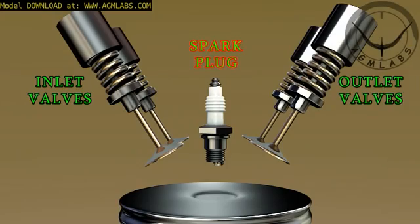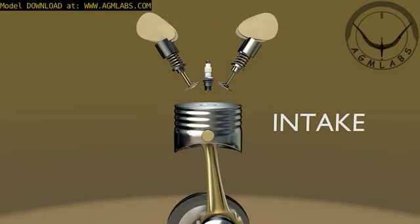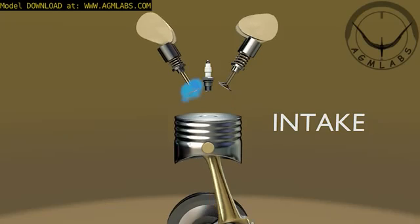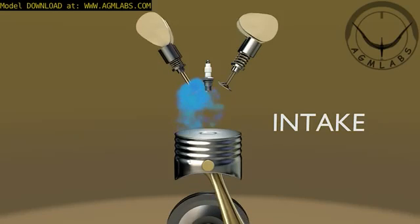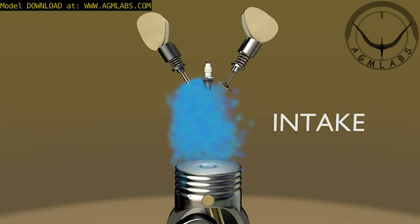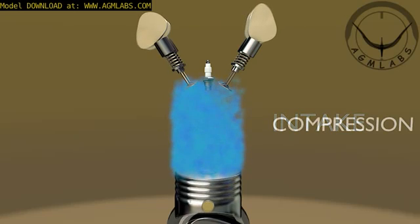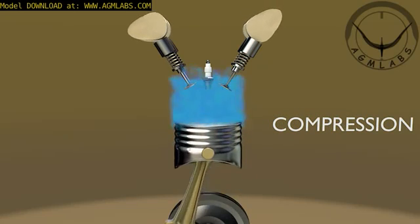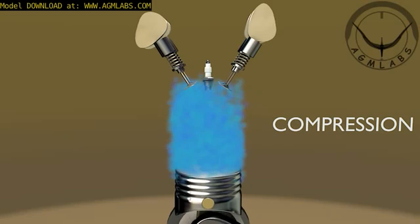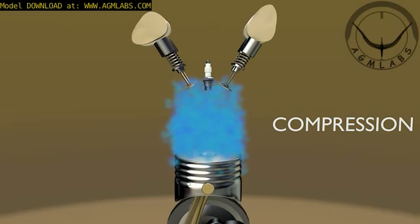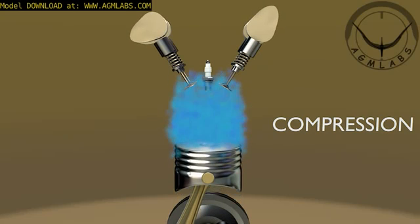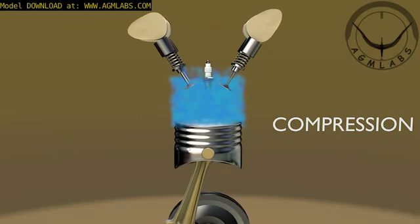Let's now take a look at how the combustion creates pistons' motion. First, intake stroke: the inlet valve is opened, and the fuel-air mixture is drawn in as the piston travels down. Second, compression stroke: the inlet valve is closed, and the piston travels back up the cylinder, compressing the fuel-air mixture.